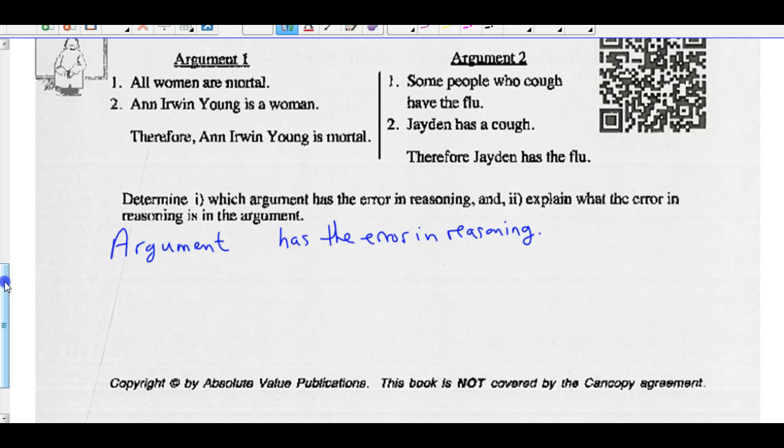So argument 1 seems to be sound. All women are mortal. Anne Irwin-Young is a woman. Therefore, Anne Irwin-Young is mortal. That one is true. So argument 2 has the error in reasoning.